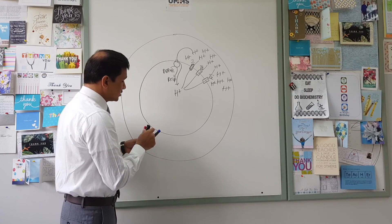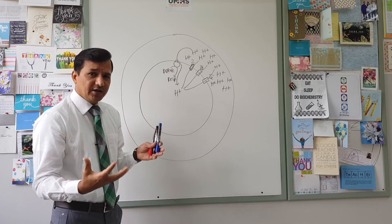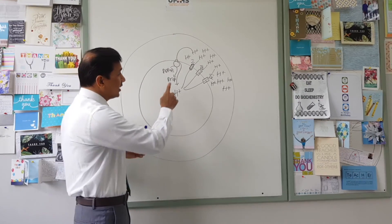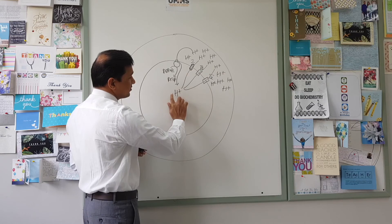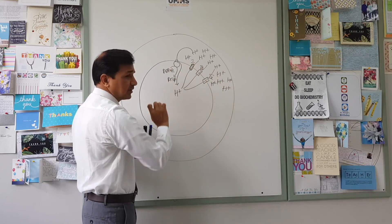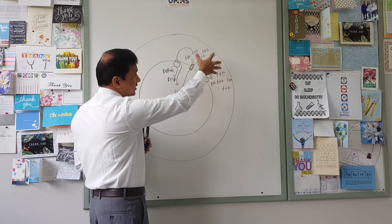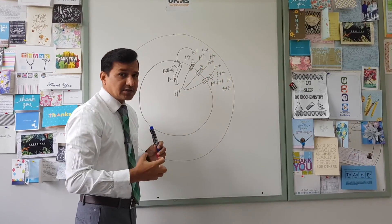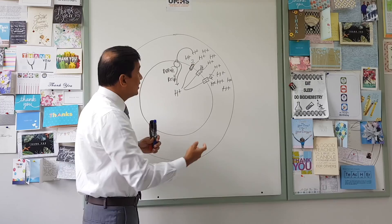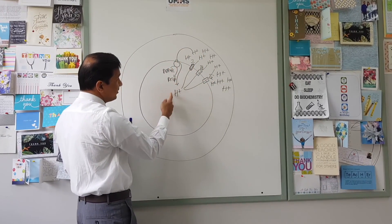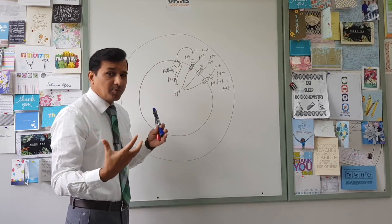On oxidation of NADH+H⁺ and FADH₂ in the inner mitochondrial membrane, these complexes pump protons from the matrix side into the intermembrane space. These protons accumulate and build up in the intermembrane space. Once a sufficient concentration is built up, they start to move back into the matrix through the ATP synthase protein complex.